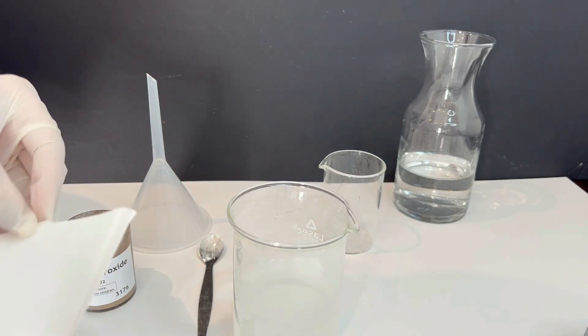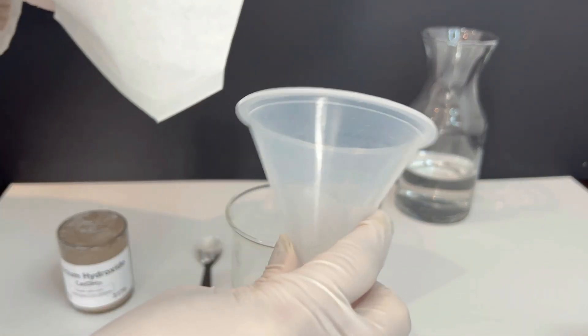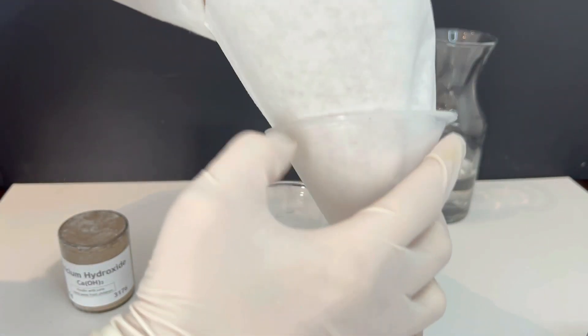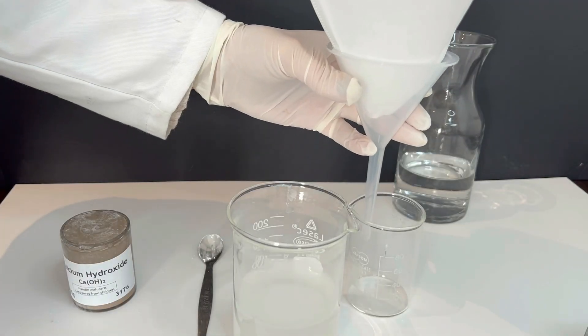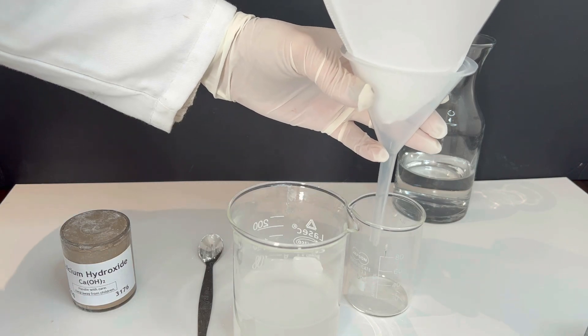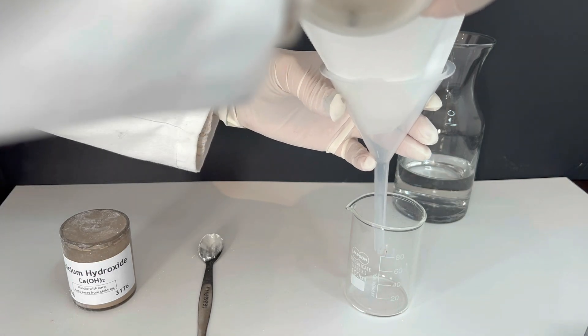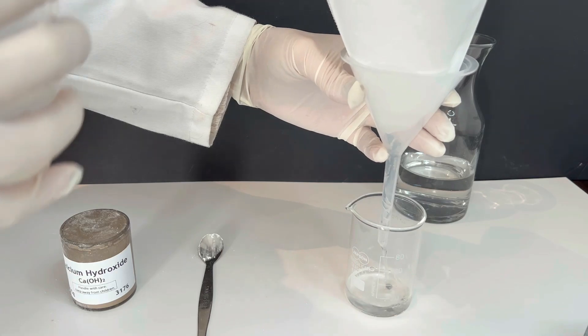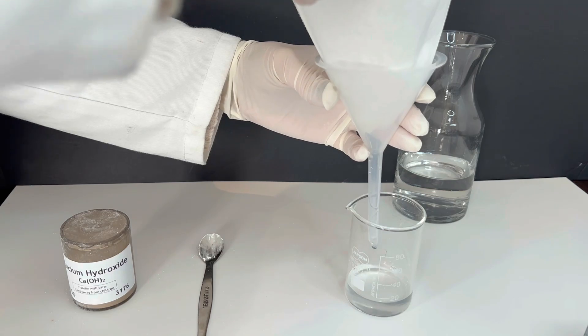Now we'll filter the solution. Place filter paper inside a funnel and position the funnel over a clean beaker or container. Gently pour the clear liquid through the filter. This separates the dissolved calcium hydroxide solution from the undissolved particles.